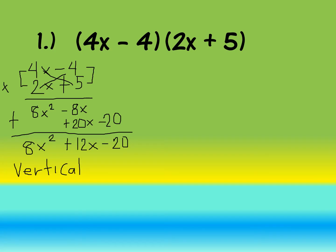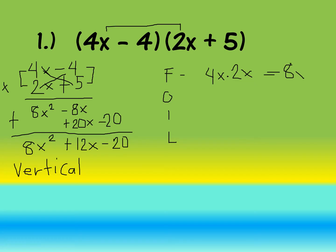Now let's proceed to the horizontal method using the FOIL method. First, multiply the first terms: 4x and 2x. 4x times 2x gives us 8 — 4 times 2 is 8, copy the base x, add exponents 1 plus 1 to get 2 — so 8x².